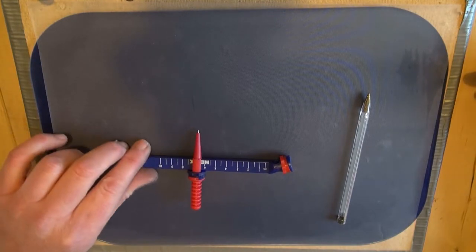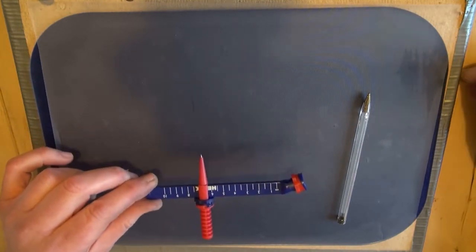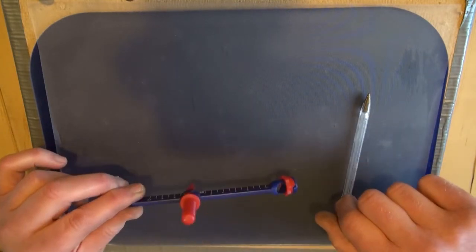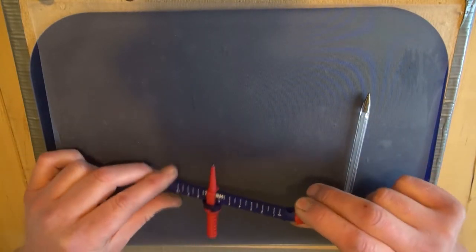So this is the compass we're going to use today. It's a standard sort of beam compass. This end is where the pen goes through and this end's the pointy bit.